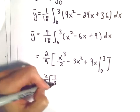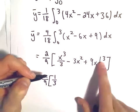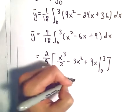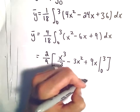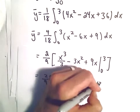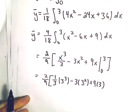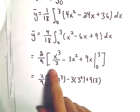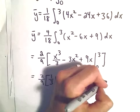So we've got 2/9 times [1/3(3³) - 3(3²) + 9(3)]. Plugging in the lower limit of 0 just gives us zeros.